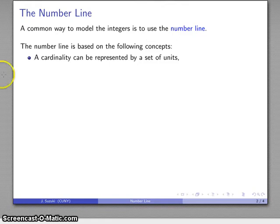This goes back to the idea that when we talk about cardinality, when we talk about the number of objects, we refer to some particular property of a set. So the idea is that any cardinality we can think of as corresponding to a set of units.